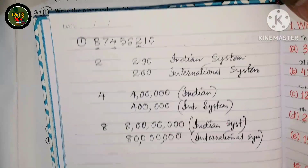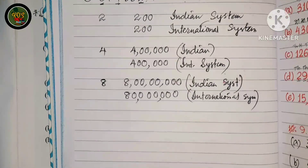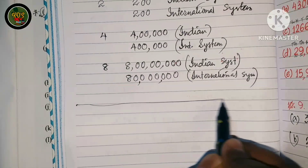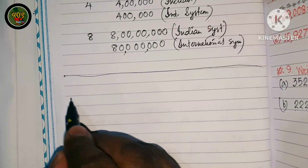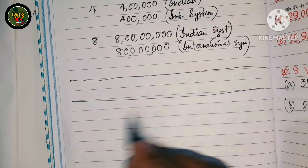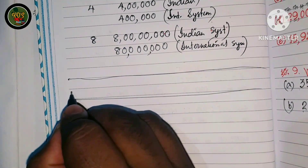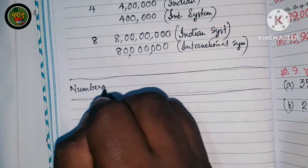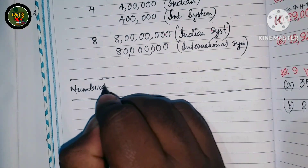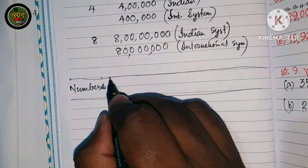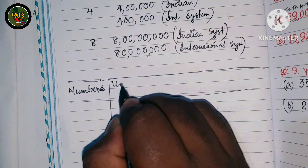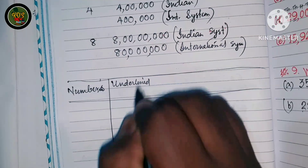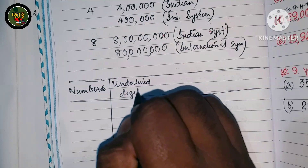Okay, I will write this one. We have the table. The table will help us write this. Now the number we will write — the column that is underlined, this column is underlined.